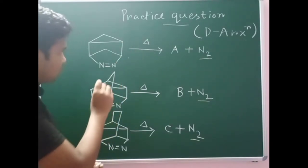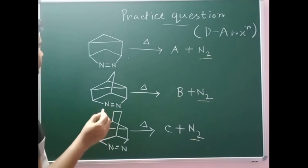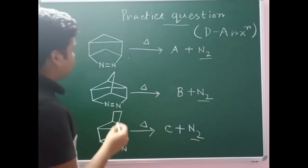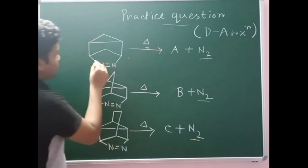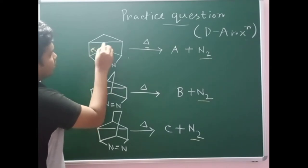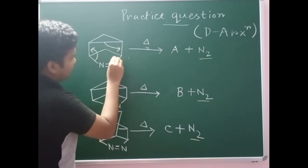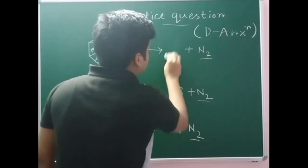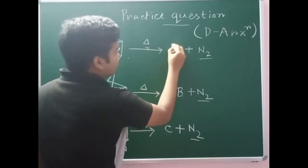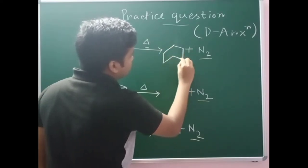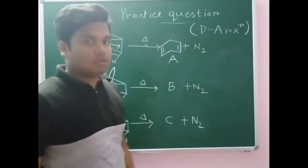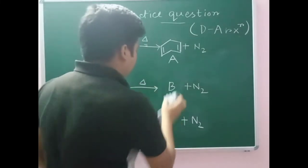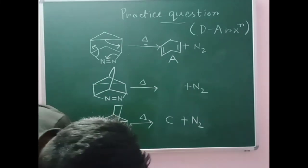Here I will not discuss the mechanism — only I will show the answer. In place of heat, this bond will go here, this bond will come here, and this one will come here. So product A will be this structure.